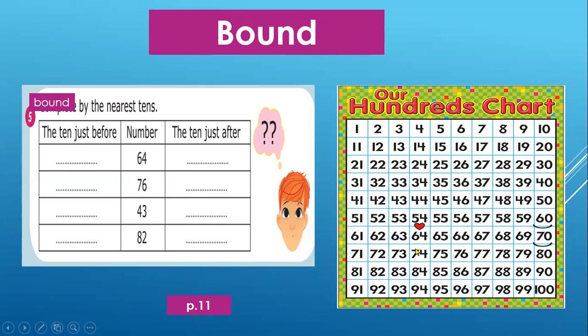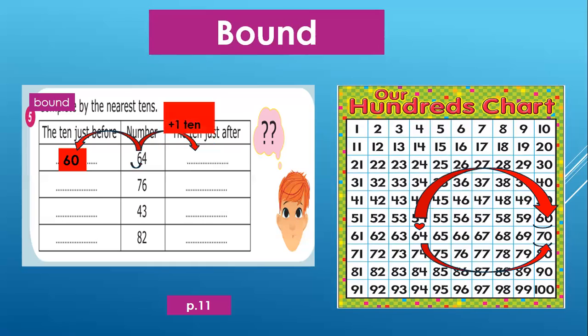So 64 is between 60 and 70. I have another way. Look at this. I underline the tens digit. 6 tens, it means 60. Then I add 1 on the tens digit. So 6 plus 1, it will be 7 tens. 7 tens, it means 70.